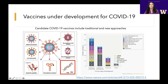We also have recombinant protein subunit vaccines. That's where you take a portion of the virus — for example, the spike protein — and produce that as a protein in the laboratory, purify it, and inject it. An example is our hepatitis B vaccine.